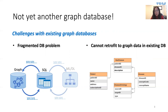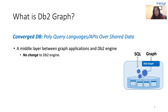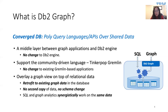We built DB2 Graph to specifically address these challenges. DB2 Graph is a converged database solution where poly-query languages or APIs are supported over the shared data. In particular, it is a middle layer between graph applications and the DB2 relational engine, with no change to the existing DB2. DB2 Graph supports the popular TinkerPop Gremlin graph query language, so there is no change to existing Gremlin-based applications. Most importantly, DB2 Graph overlays a property graph on top of existing relational data, enabling graph queries on existing graph data stored in relational databases, with no secondary copy of data and no schema change.